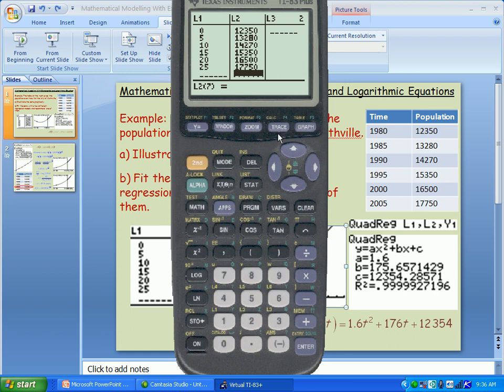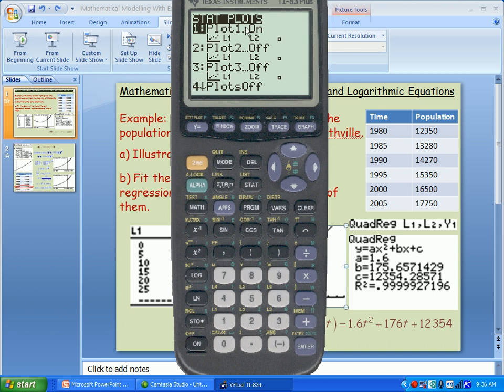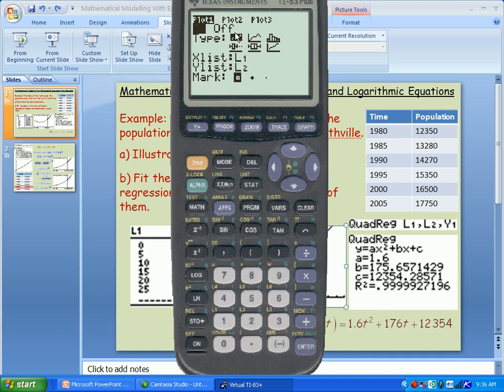So I have my data in the calculator. Now I want to graph the data, and so I need to turn a stat plot on. Notice it says stat plot up here. So I hit second, the y equals, and that plot is on. If it was off I would actually just go into it and make sure I highlight the on, and I'm going to draw a scatter plot.